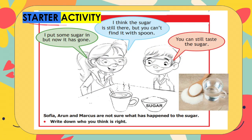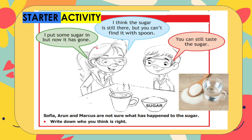For our starter activity, these children are describing their ideas about what happens to sugar when it is put into a hot drink. One girl says she put some sugar in but now it has gone. Another thinks the sugar is still there but you can't find it with a spoon. The boy says you can still taste the sugar. Do you agree with any of the children? Write down who you think is right and share your ideas.